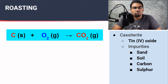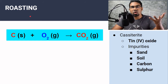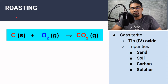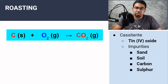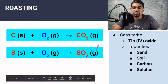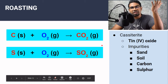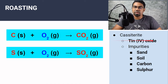The next step is called roasting. Roasting is simply burning in oxygen. The other impurities such as carbon and sulfur burn in oxygen and burn off because they become gases. Carbon reacts with oxygen to form carbon dioxide, and sulfur reacts with oxygen to form sulfur dioxide. These gases are released, and what is left is a purer version of the cassiterite — the tin(IV) oxide.